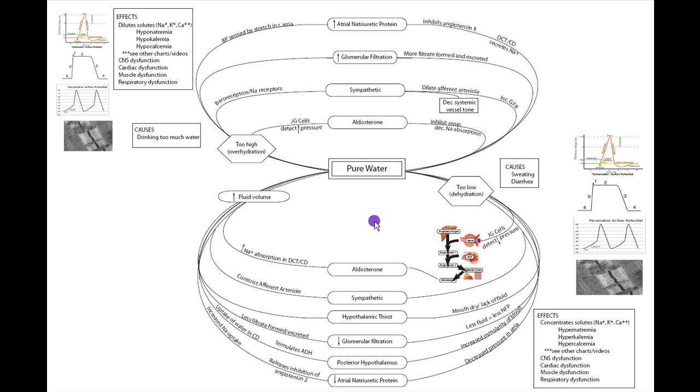The first of many mechanisms is aldosterone, and here again, the JG cells are going to sense a decrease in pressure. Now that's going to make renin be released, and that's going to actually increase aldosterone, which is going to try and increase sodium absorption. Now that's not really an issue, but it's going to happen if we have a decrease in blood pressure because of dehydration.